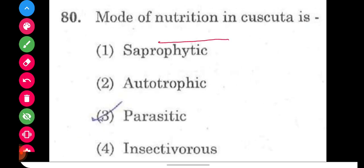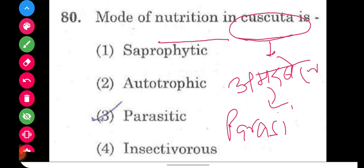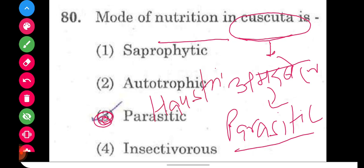Question number 80: the mode of nutrition in Kiskuta (Cuscuta, also called Amarbel). It is a vine that has no leaves of its own, so it is dependent on a host plant. It acts as a parasite — the mode of nutrition in Kiskuta is parasitic. It forms a structure called haustoria to derive nutrition from the host plant. The right option is option number three, parasitic.